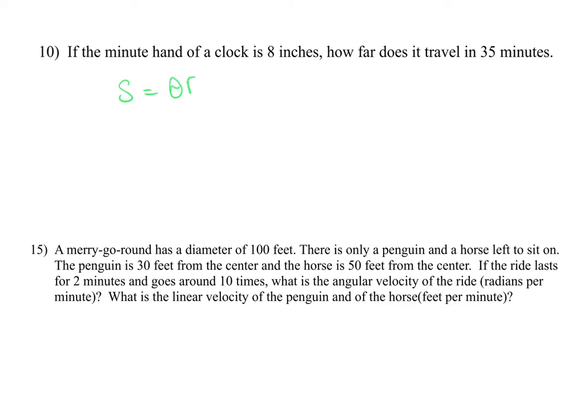For arc length, the formula is theta (in radians) times r. For area of a sector, it's one half r squared times theta. This is really just the percentage of the circle you have times either the circumference or the area — it's the same formula from geometry, just written differently as we move into radians.